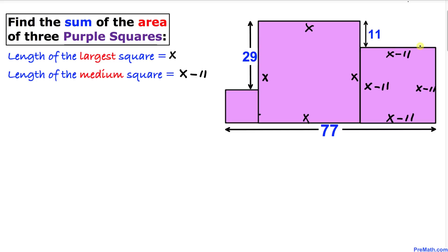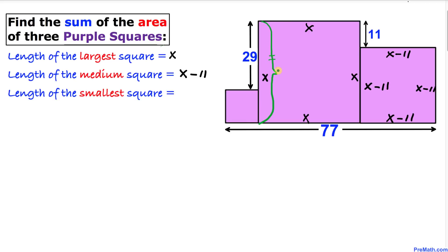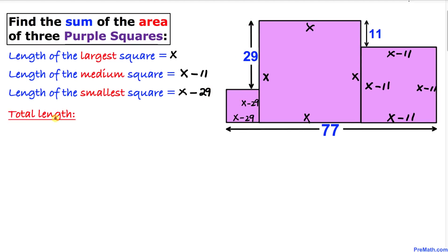Now let's focus on the smallest square, which is on the left-hand side. We know this whole side length is x and this segment is 29, so the length of the smallest square is going to be x minus 29.